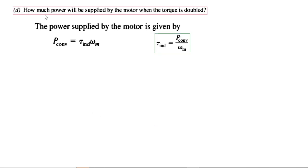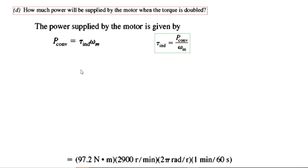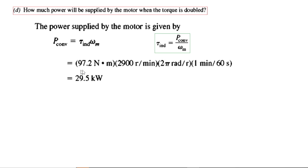The fourth part: how much power will be supplied by the motor when torque is doubled? From the torque formula, P_converted = τ_induced × ω_m. We know the induced torque calculated earlier and the new ω_m. Converting the new speed of 2900 RPM to radians per second by multiplying by 2π and dividing by 60, we obtain the new P_converted.